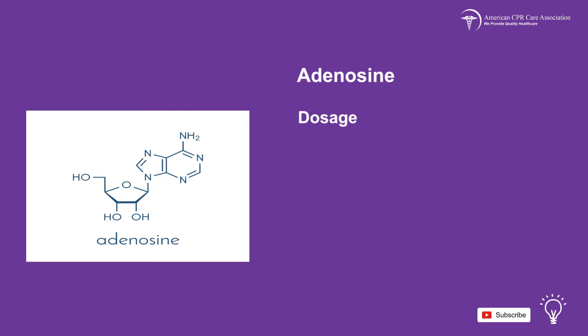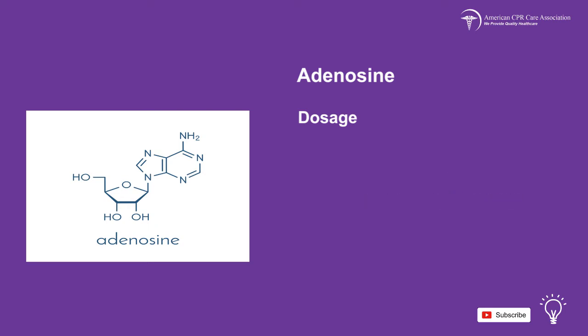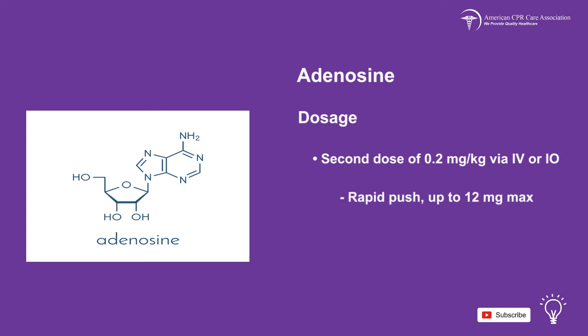The dosage is as follows. An initial dose of 0.1 mg per kg via IV or IO route, using a rapid push up to a maximum of 6 mg. The second dose should be 0.2 mg per kg via IV or IO route using a rapid push up to a maximum of 12 mg.